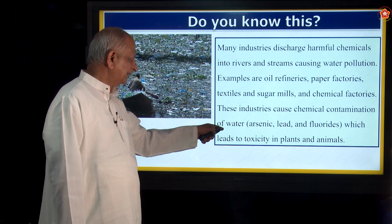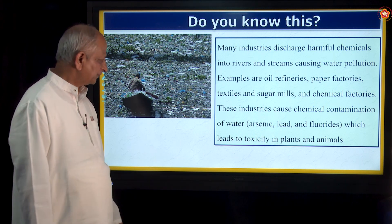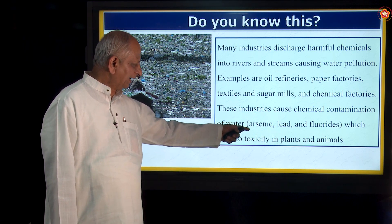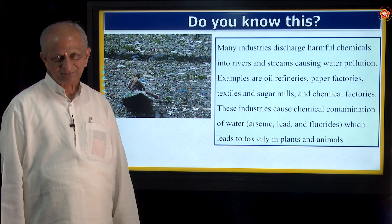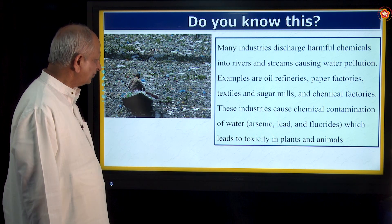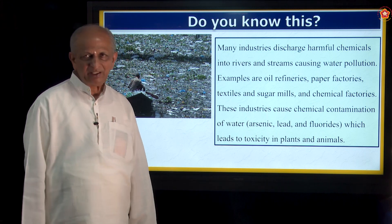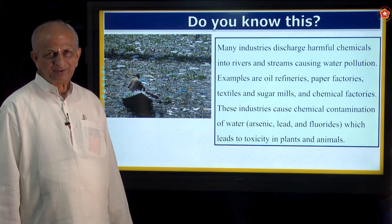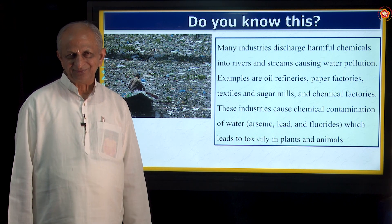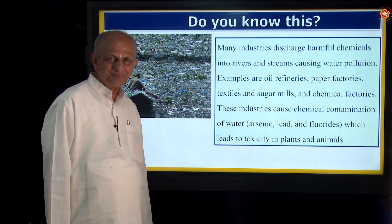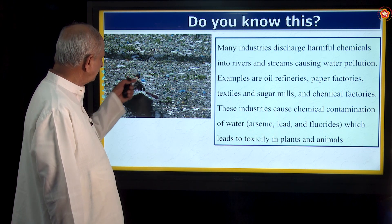Chemical contamination takes place due to poisonous chemicals like arsenic, lead, and fluorides of metals. All these add to the contamination. It leads to toxicity in plants and animals. There will be animals that come and try to drink water in such places, and plants that grow on it — all these will be affected. Even the air flowing over such water will also be polluted.